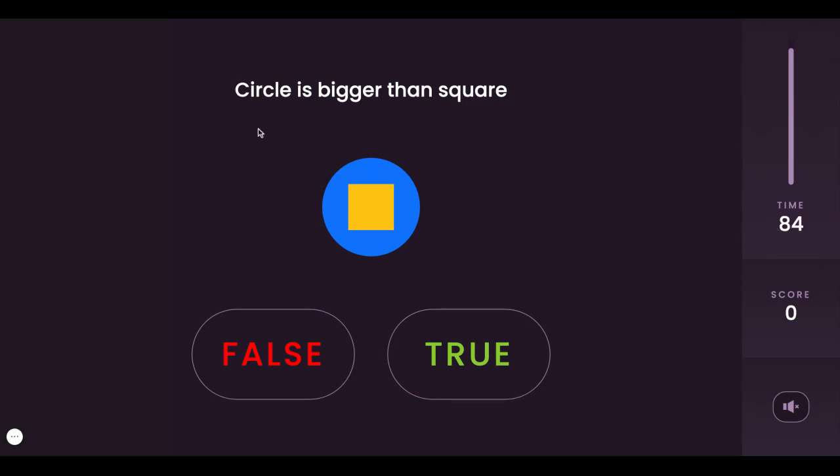So for example, it says here: circle is bigger than square. We can see that's true, so true. Square contains circle. Circle is inside the square, so true. Square is not contained by circle. The square is contained by the circle, so this is false.